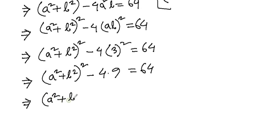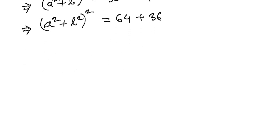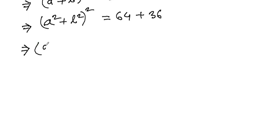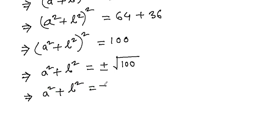(a² + b²)² - 36 = 64, so (a² + b²)² = 100. Taking the square root, a² + b² = ±100... then a² + b² = ±10.